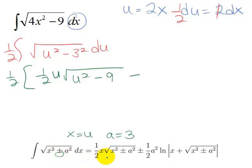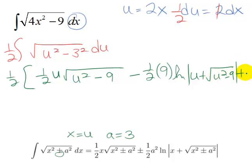And then minus, because I wanted the negative one here. I always use the lower ones along here. This is going to be 1/2, and a was 3, so 3² is 9 times a natural log of u plus the square root of u² minus 9, plus a constant.